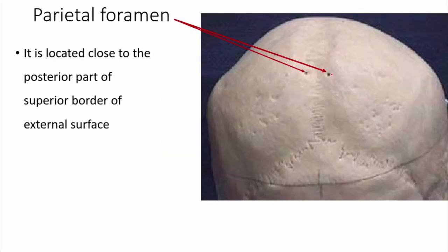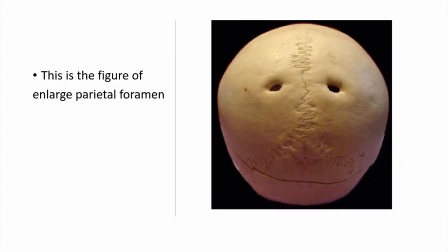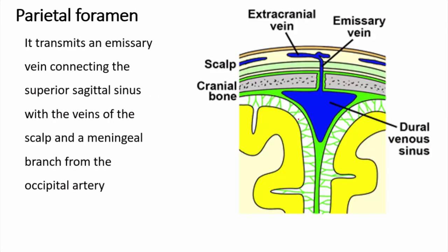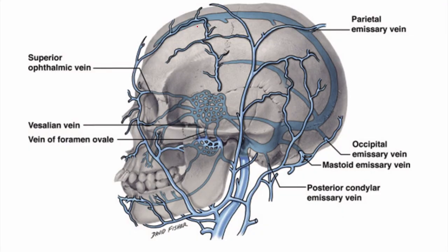The parietal foramen: its location is close to the posterior part of the superior border of the parietal bone. The parietal foramen transmits an emissary vein which connects the superior sagittal sinus with extracranial veins. So this emissary vein connects the intracranial superior sagittal sinus with extracranial veins — this is the location of the parietal foramen.